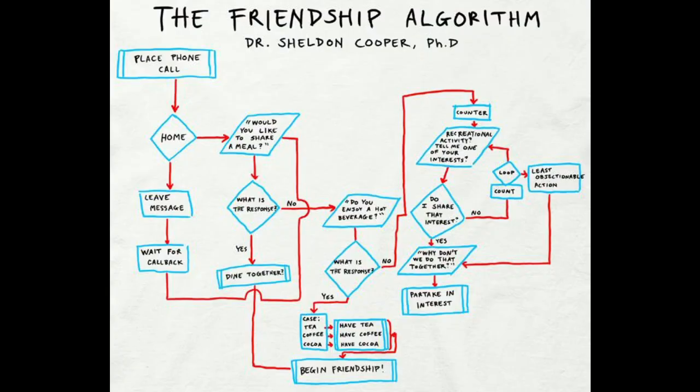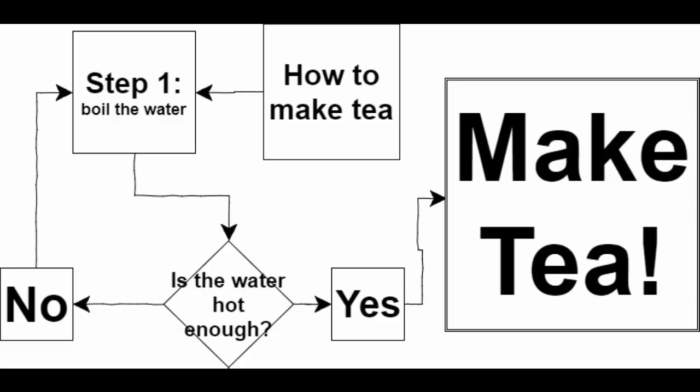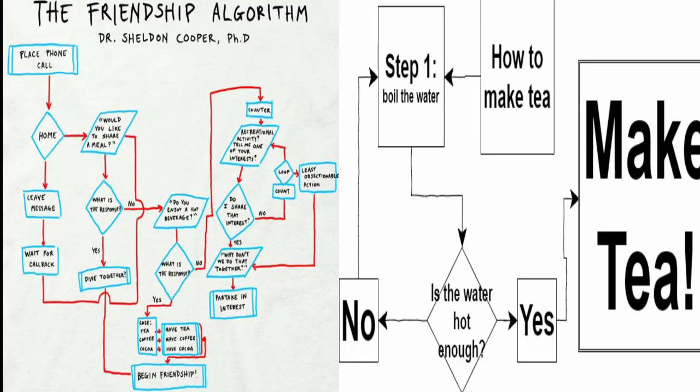So in that clip from The Big Bang Theory, you can see Sheldon moving through the flowchart based on the answers he's getting from Kripke — just like in our tea algorithm. Every time I needed to make a decision, I would move through the flowchart depending on yeses and nos. Here are the two algorithms side by side: the friendship algorithm by Dr. Sheldon Cooper, and then mine. Similar, yes? Dr. Cooper's is more complex than my tea-making algorithm, but they're still flowcharts — still algorithms for how to do something. Step-by-step instructions. That's all an algorithm is, and that's all a computer program is.